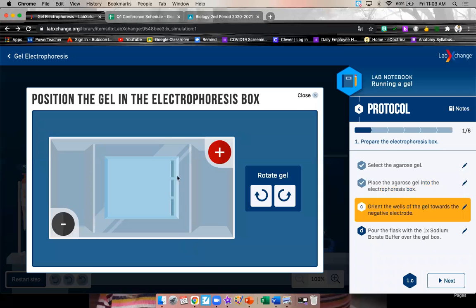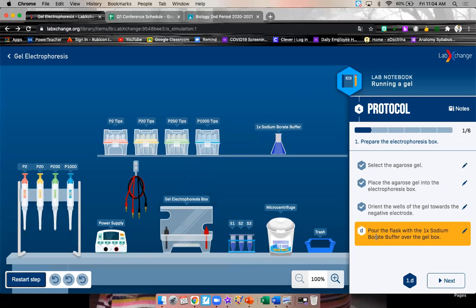Click on the box. And here are the wells. We want them on the negative side. Then pour the flask of the buffer over the gel box. So here's your buffer. And pour it over the gel. We get rid of our empty glass.